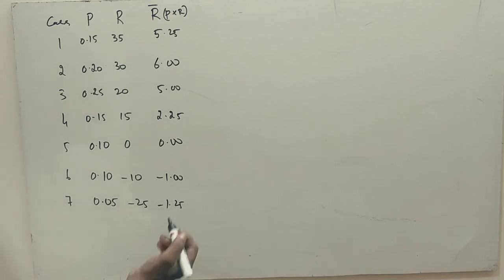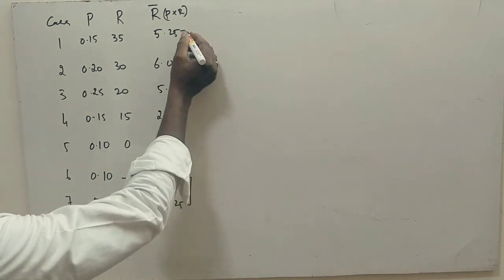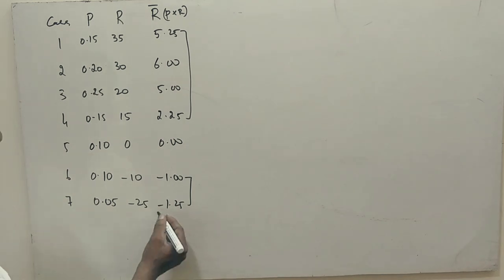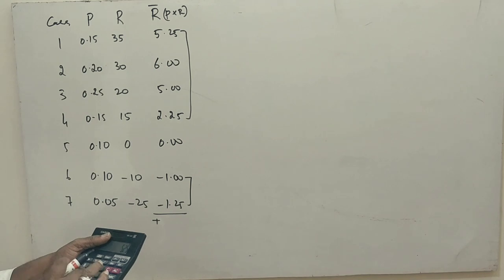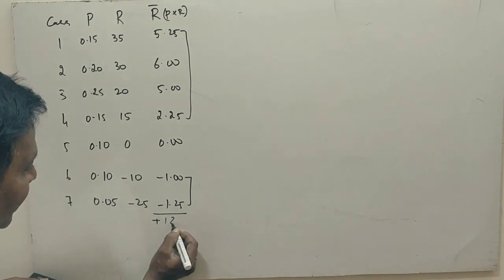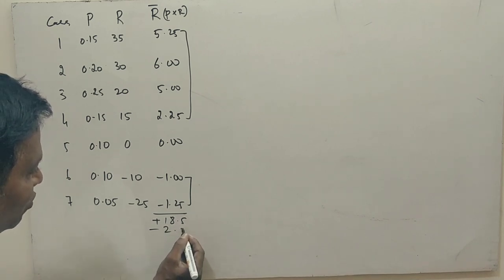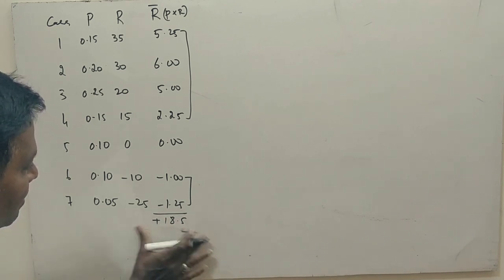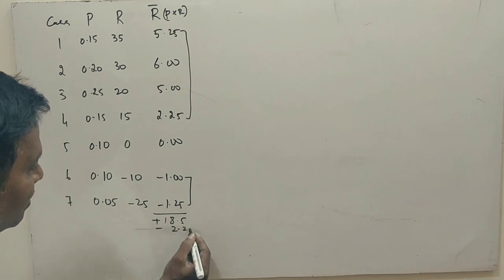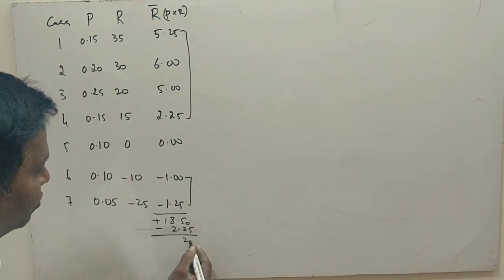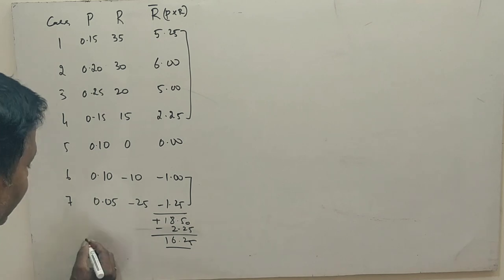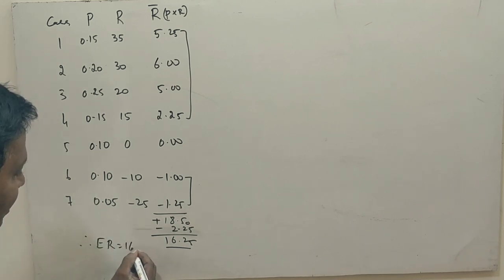Now what we do is, add the plus values and subtract the minus values. Now I will check the totals of plus values. So 5.25 plus 6 plus 5 plus 2.25 is 18.5 and minus 2.25, so 16.25. Therefore, expected return is 16.25. Got it sir? Yes sir.